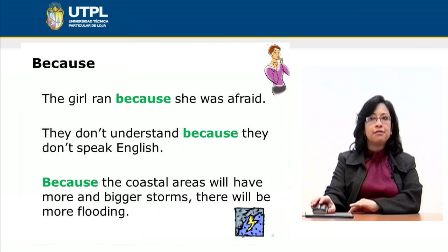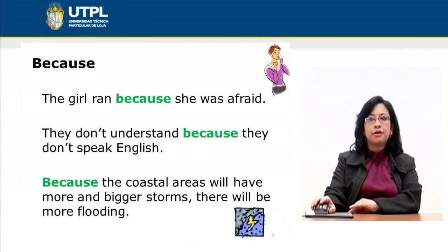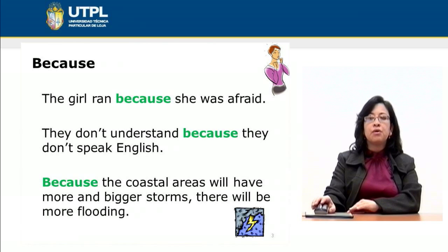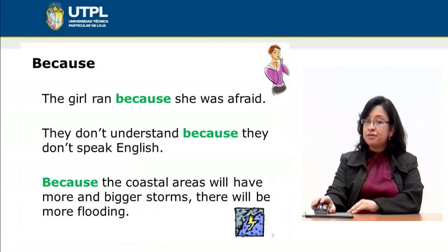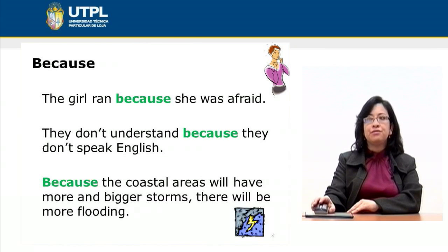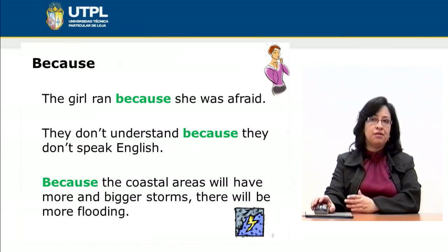For example: 'The girl ran because she was afraid.' So why did the girl run? She ran because she was afraid. And then we have 'They don't understand because they don't speak English' — again it explains why they don't understand; it presents the cause. Another example: 'Because the coastal areas will have more and bigger storms, there will be more flooding.' The cause is the bigger storms, and the effect is more flooding. In all three examples, 'because' presents the cause, and as you can see its position can be in the middle or at the beginning of the sentence.